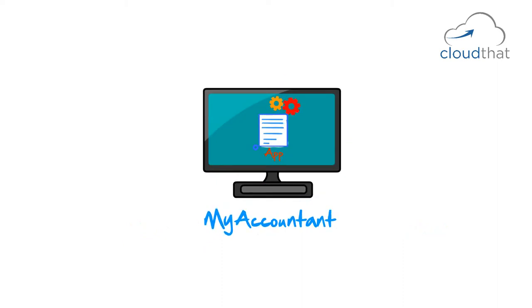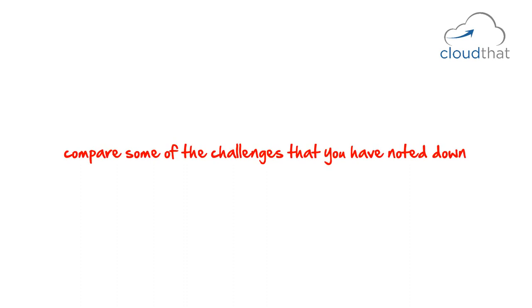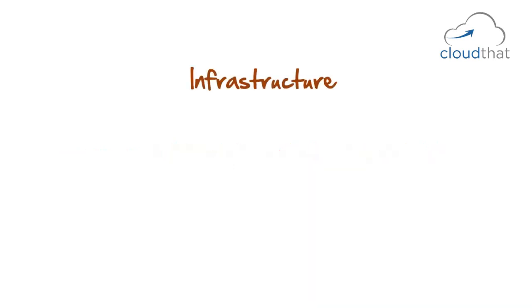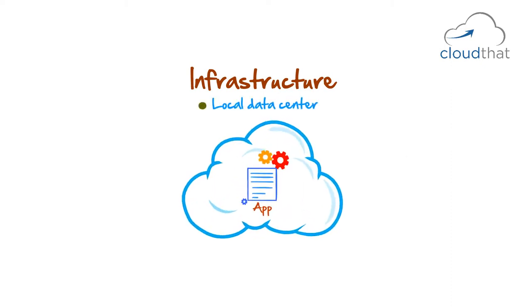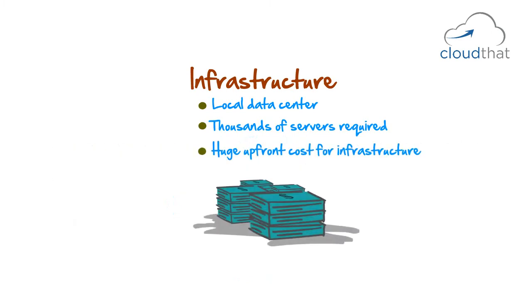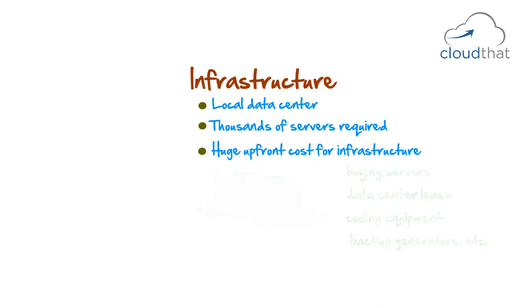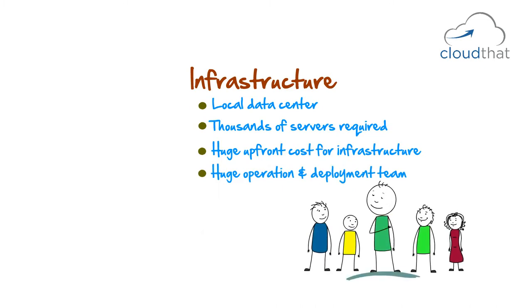When the accountant was a desktop software, you gave a CD to customers, they installed it and used it. But as a hosted solution, you have a lot more to consider. First, infrastructure: since this is a hosted application, it must be hosted on servers in your data center. As customers use your application, the data must be stored in your data center with provisions for backup. You might need thousands of servers and need to add more as your customer base grows. You will need a huge upfront cost to procure the infrastructure — servers, data center lease, cooling equipment, backup generators — plus a large operations and deployment team to manage, monitor, and deploy on it.